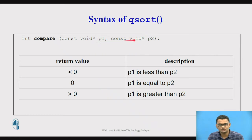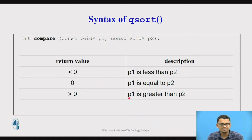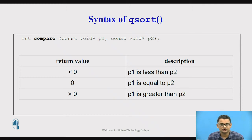If p1 equals p2, the difference is 0, meaning both are in the correct position relative to each other. If the difference between p1 and p2 is greater than zero — say p1 holds 10 and p2 holds 5 — that means p1 is greater than p2 and should be placed to the right of p2. So 10 minus 5 gives positive 5, indicating 10 should come after 5 in sorted order.